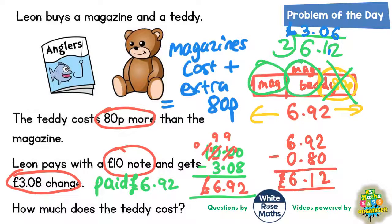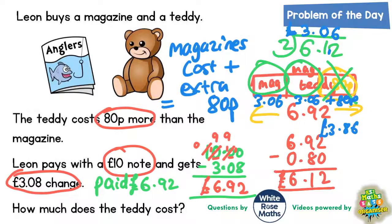Going back to the bar model, if the magazine is £3.06, then the teddy is the magazine's cost of £3.06 plus an extra 80p. So we need to do £3.06 plus 80p, which is £3.86. And that is our final answer for the teddy — £3.86.